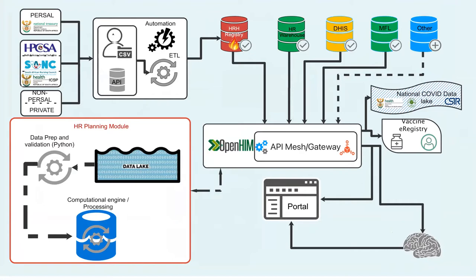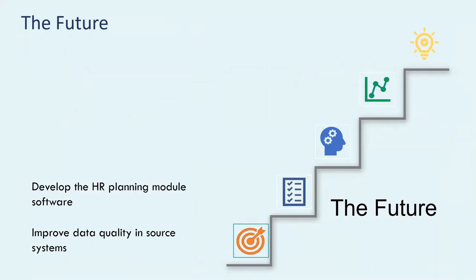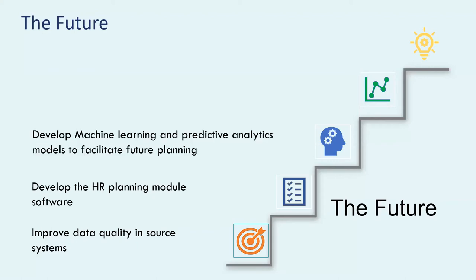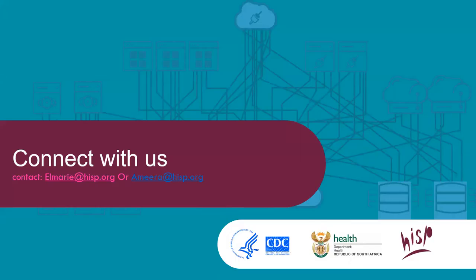This concludes the overview of the HRIS architecture. For ongoing work, we are currently working with primary data sources to improve data quality, still developing the HR planning module, and looking to develop machine learning and predictive analytic models to facilitate future planning. We plan to work with stakeholders to enhance analytic outputs and will continue enabling the Ministry of Health to reach HRH strategic goals. We acknowledge our partners: CDC, National Department of Health, and PEPFAR. Thank you all.